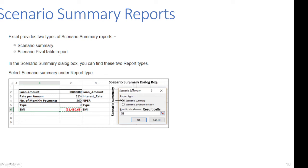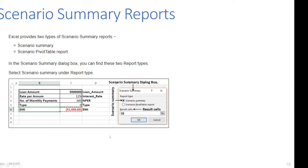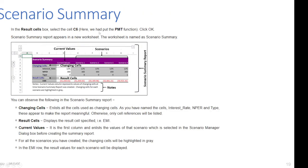Excel provides two types of scenario summary reports in the Scenario Summary dialog box: Scenario Summary and Scenario PivotTable. Select 'Scenario Summary' and then specify the result cell. The result cell is C6 — that is where we placed the PMT function. In the result cell box, select C6, then click OK.